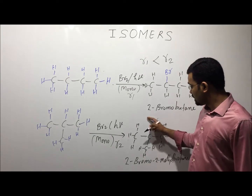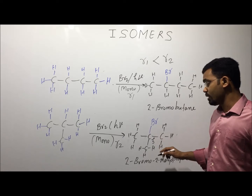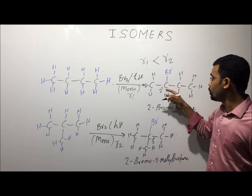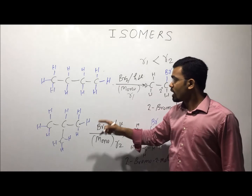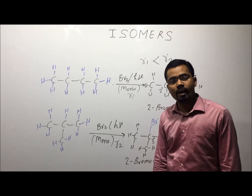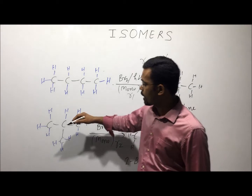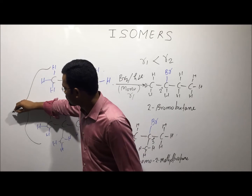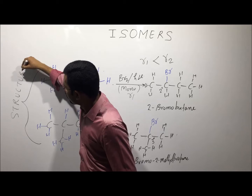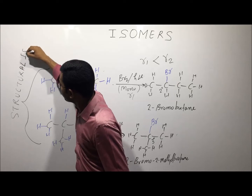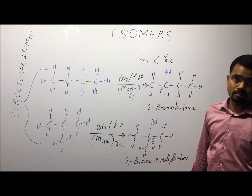This is because the reaction occurs through a free radical mechanism. Isobutane gives a tertiary (3°) free radical, which is more stable compared to the secondary (2°) free radical in the case of normal butane. So both compounds have the same molecular formula but different physical and chemical properties; therefore both are called structural isomers.